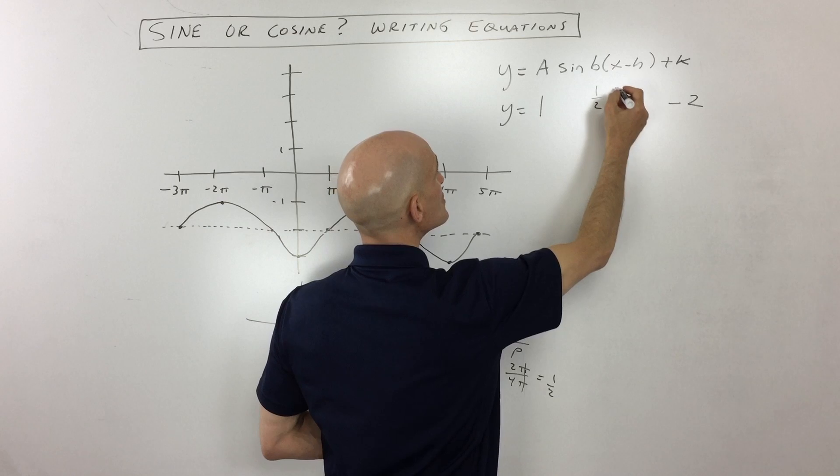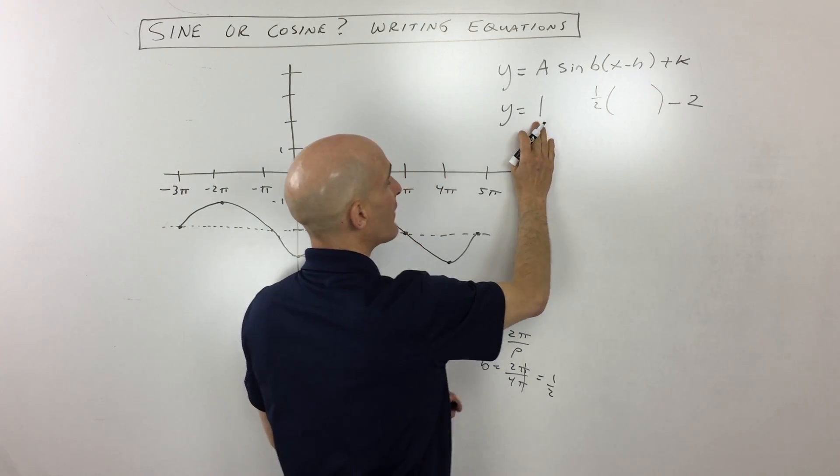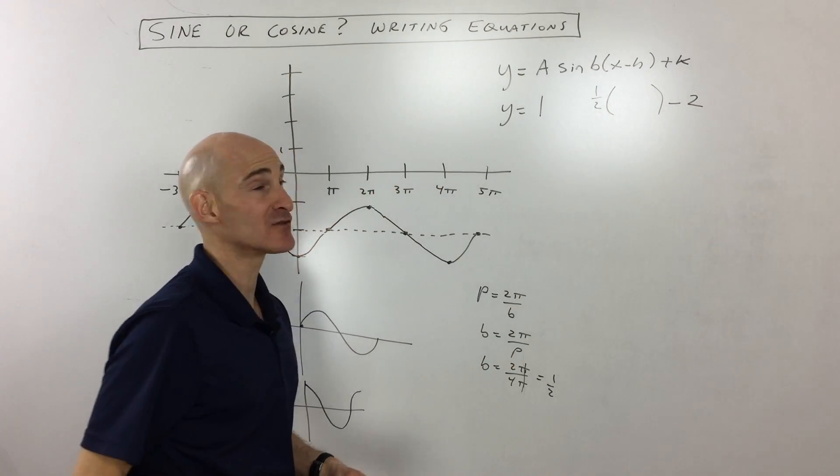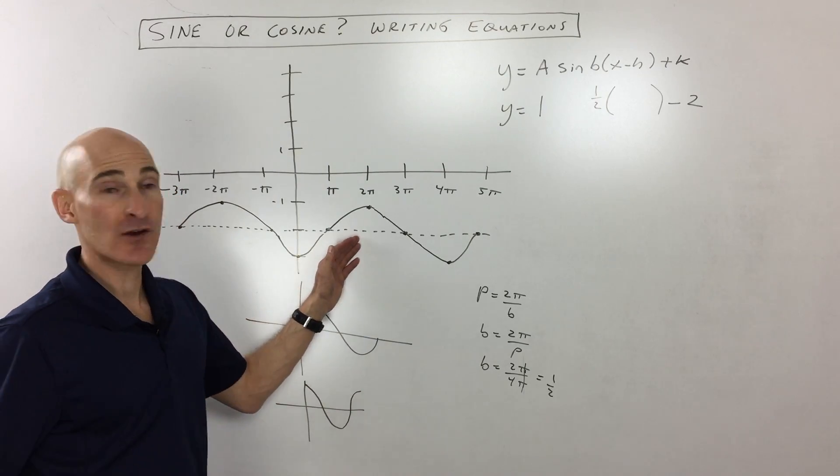So in any of these equations that we're going to be writing here, we're going to have the same basic format. We're going to have amplitude is one, b is one half, the vertical shift is negative two. But then what we want to analyze is whether we're going to use sine or cosine.